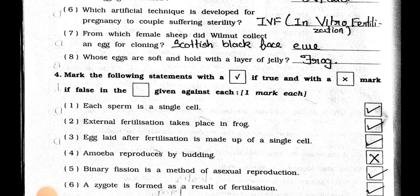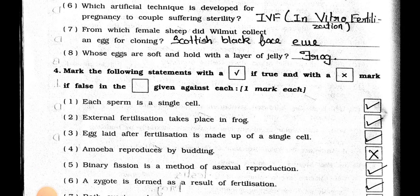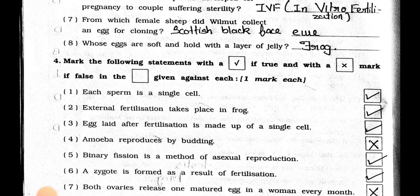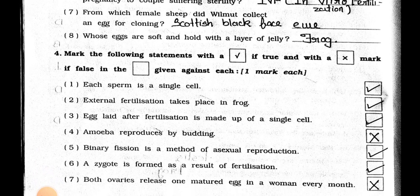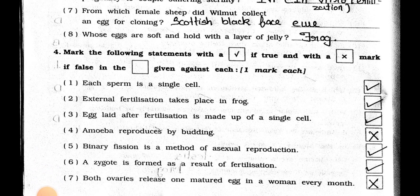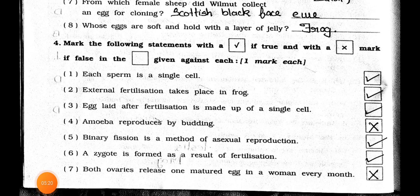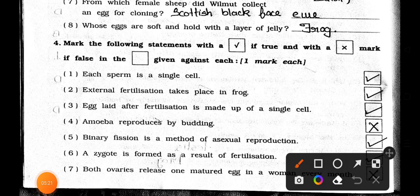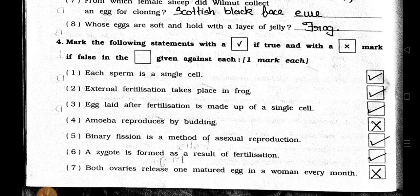Number 8: Whose eggs are soft and covered with a layer of jelly? Answer is the frog. Now see Main 4: Mark the following statements with a tick if true and with a wrong mark if false in the box, given against each, one mark each.